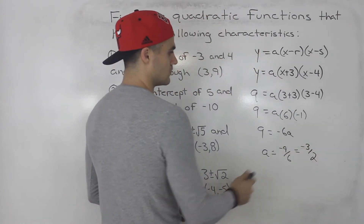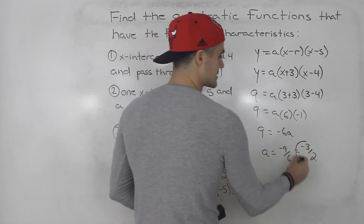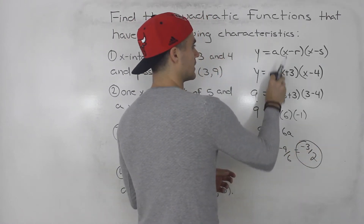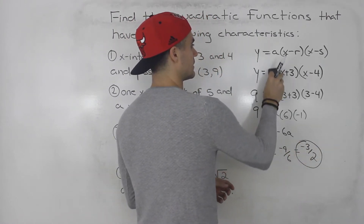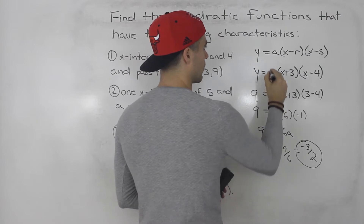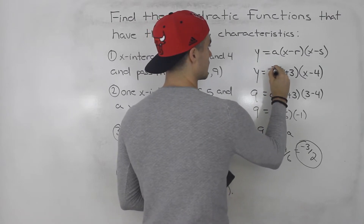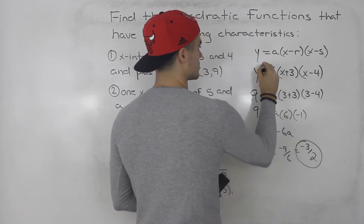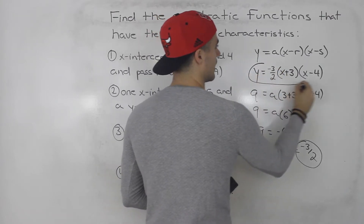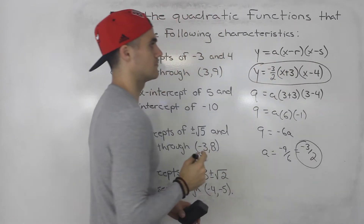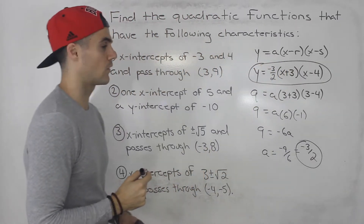Taking this a value and plugging it in, the final answer for number one is y equals negative three over two times (x + 3)(x - 4).